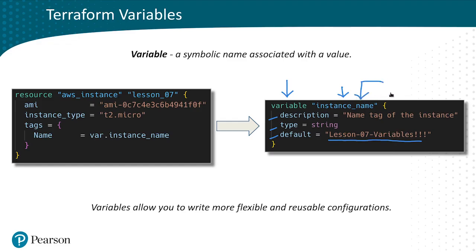In reality, you don't have to have any of that information — you don't even have to have the default value. The value could be stored elsewhere, and often is. Normally we would put the variable block into a file called variables.tf or a tfvars file, and variables.tf is what we're going to use in the lab.